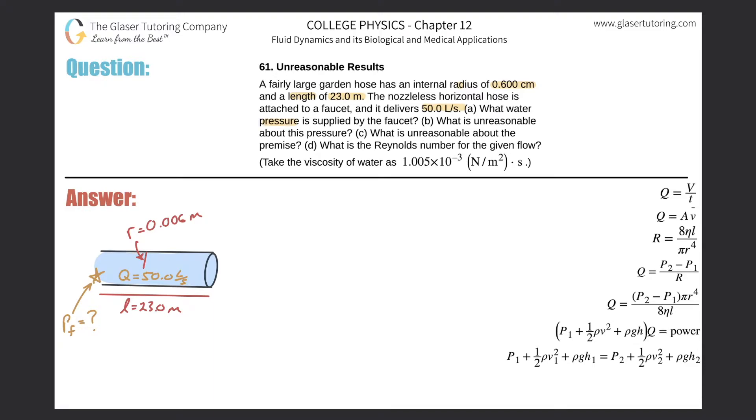Letter A: What water pressure is supplied by the faucet? All right, so here's a little diagram. We have a certain length of the tube, we're going to have a certain flow rate through the tube, we have a certain radius, and we want to know what the pressure is at the faucet.